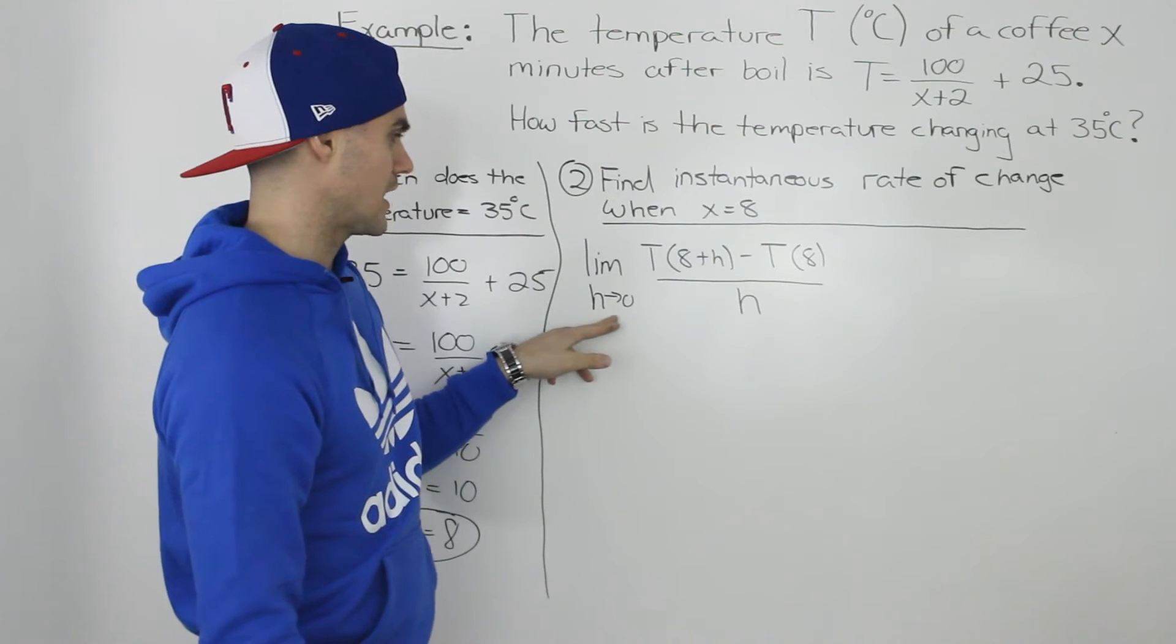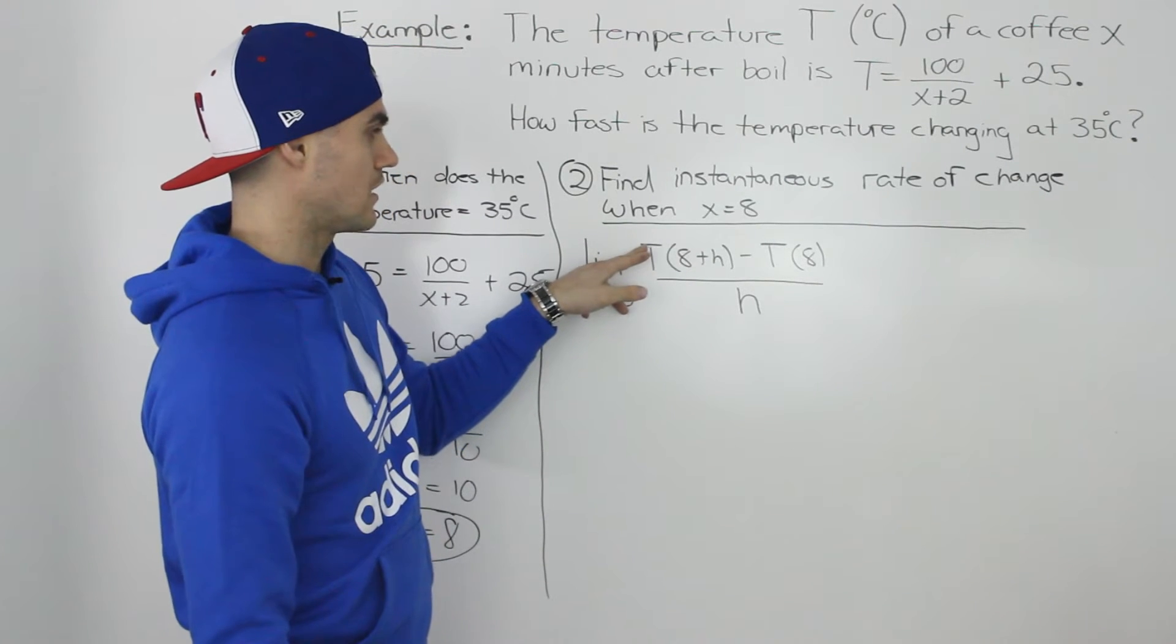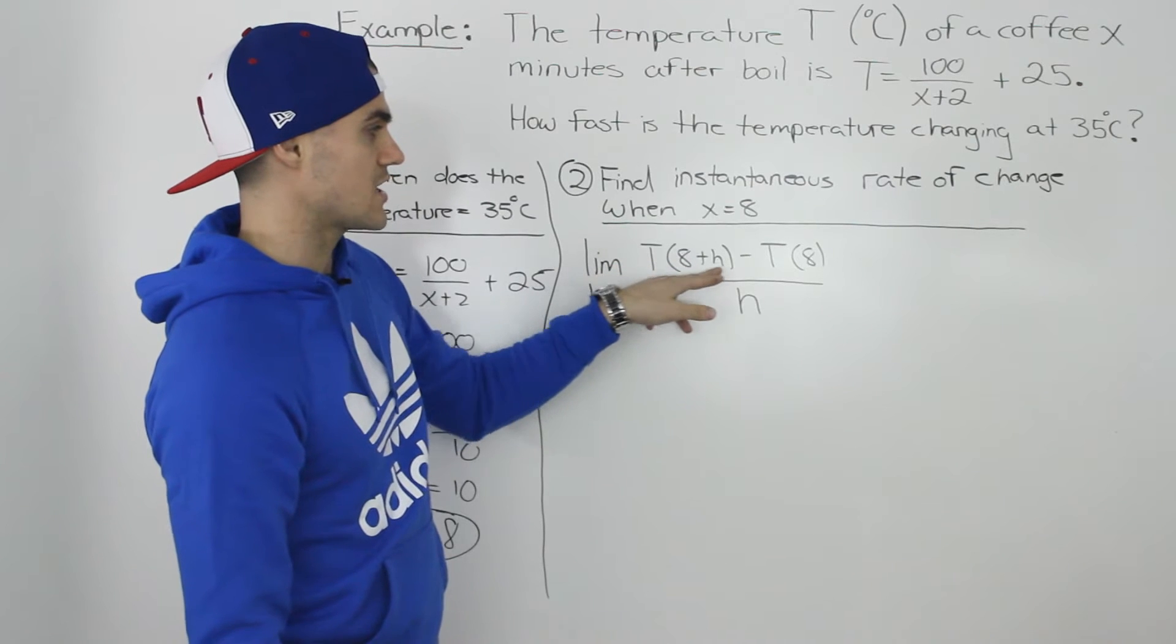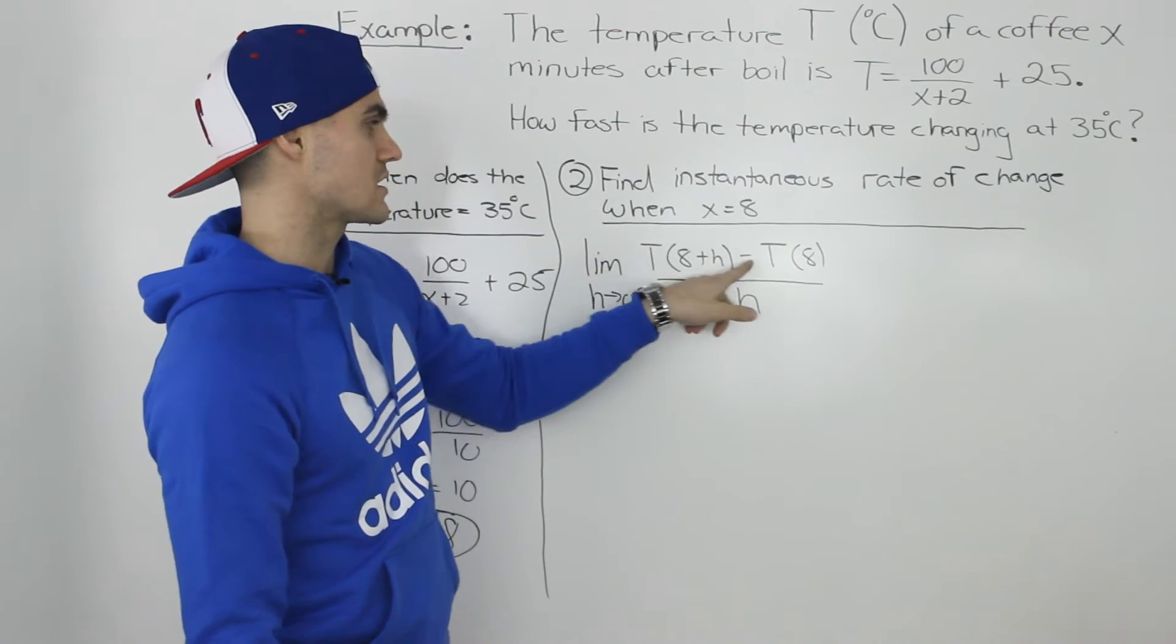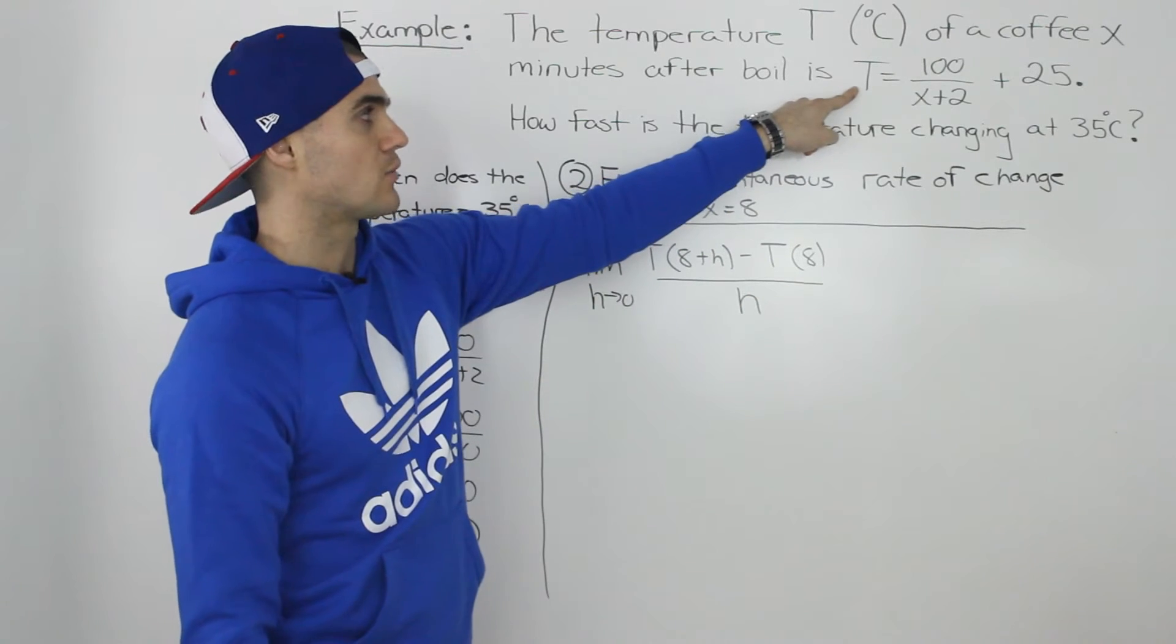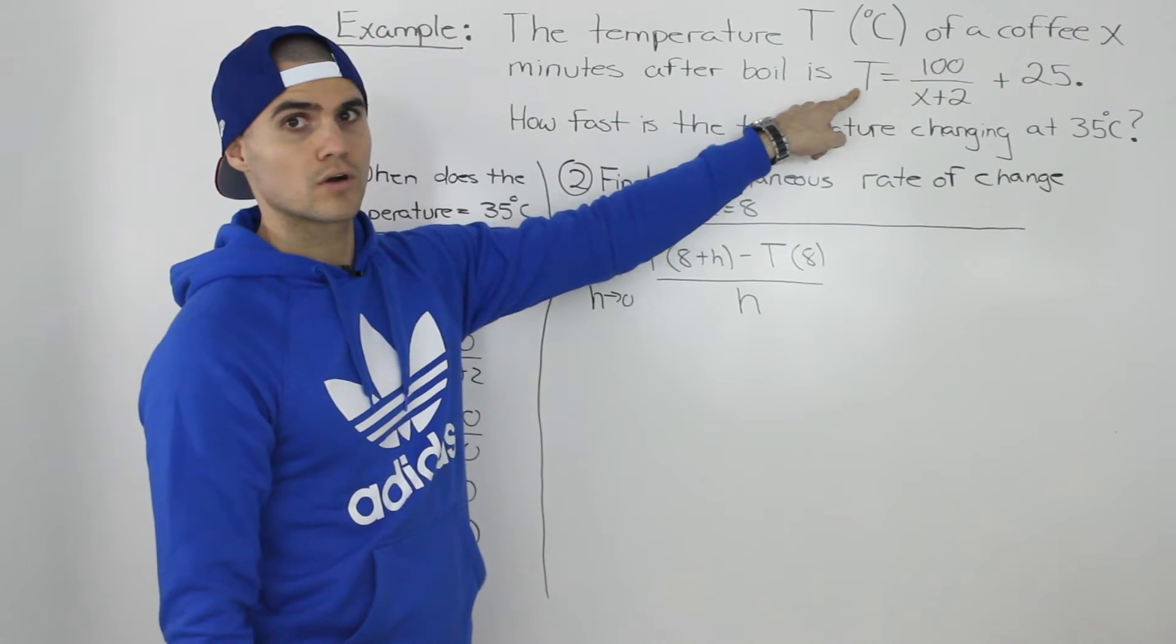we would use the difference quotient, the limit as h goes to 0, of T of 8 plus h minus T of 8 all over h, where this capital T here represents this function that we were given.